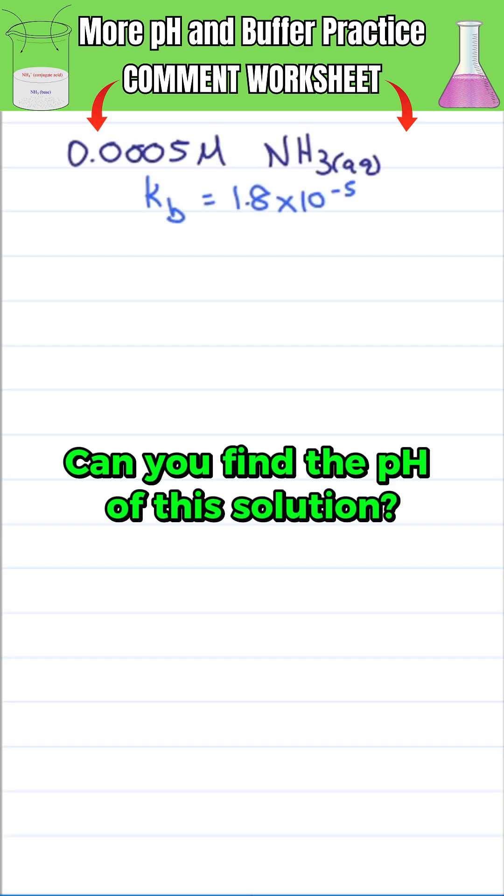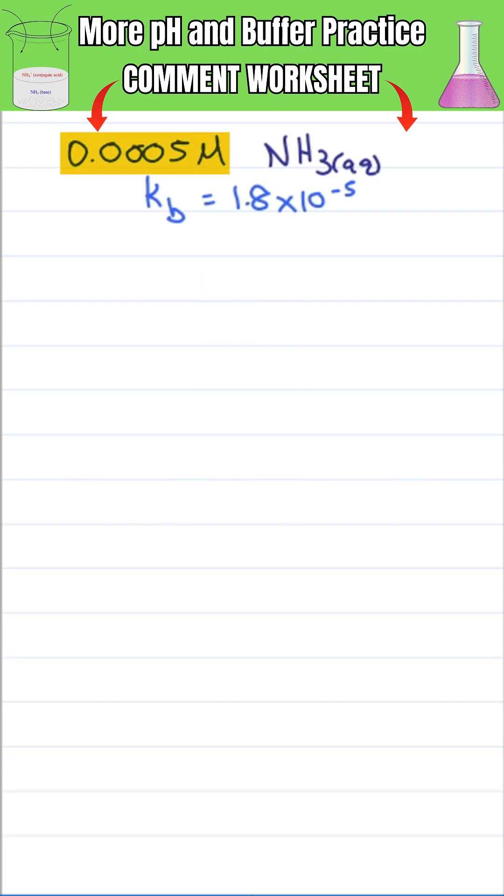Can you find the pH of this solution without a calculator? We're given a 0.0005 molar solution of ammonia, which is a base, and a Kb value of 1.8 times 10 to the minus 5.